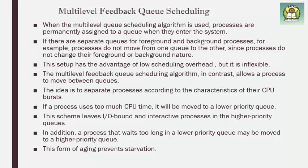In multi-level feedback queue scheduling, there is no restriction preventing processes from leaving their queue. A process which is using too much CPU time will be moved to a lower priority queue.